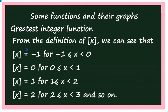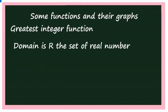Now let us look at the values of ⌊x⌋ in standard intervals. ⌊x⌋ = −1 when x ∈ [−1, 0). ⌊x⌋ = 0 when x ∈ [0, 1). ⌊x⌋ = 1 when x ∈ [1, 2). ⌊x⌋ = 2 when x ∈ [2, 3), and so on.